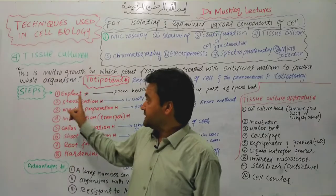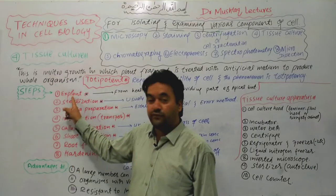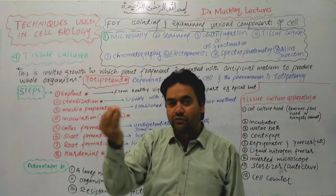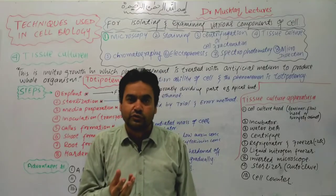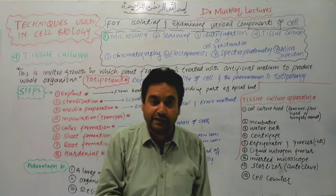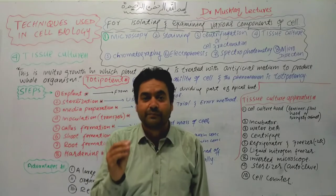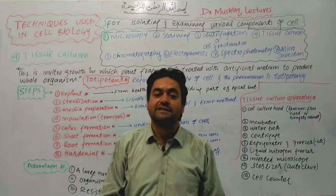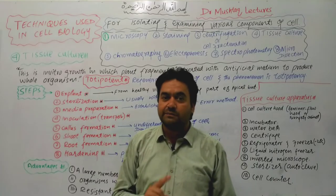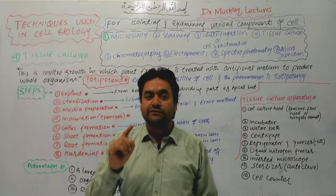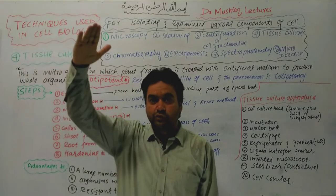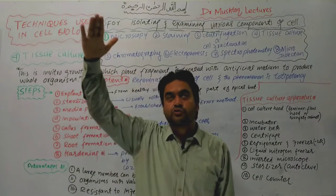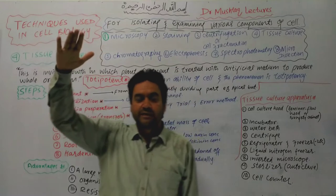The first step is the selection of the explant — selecting a plant part that will undergo growth. You want a plant that can give rise to new plants and is healthy. The division of the explant is related to the meristematic region, such as the root tip or shoot tip.